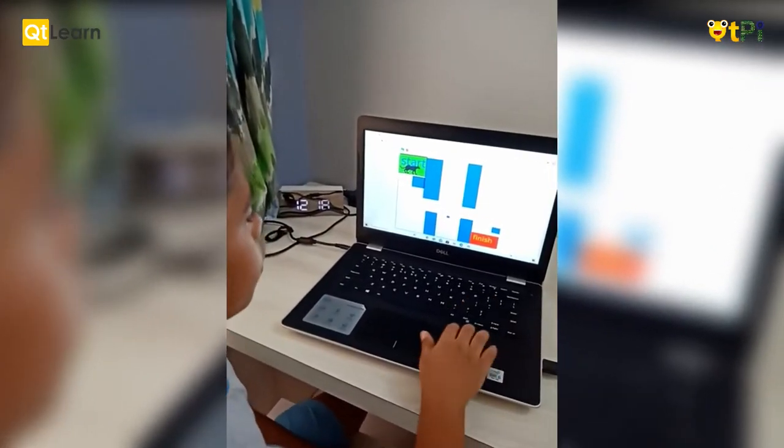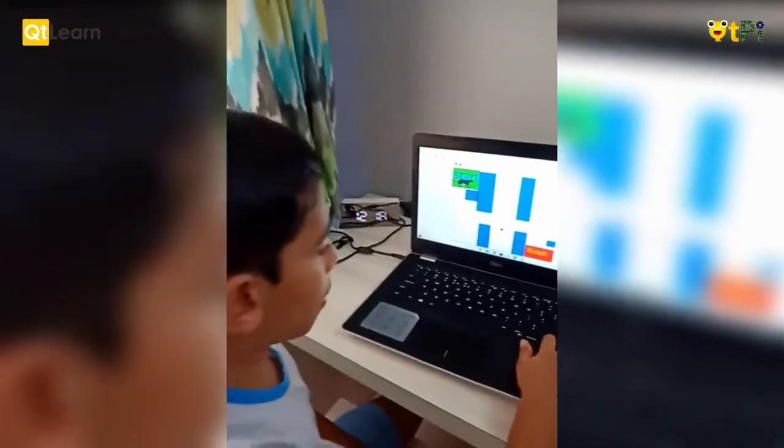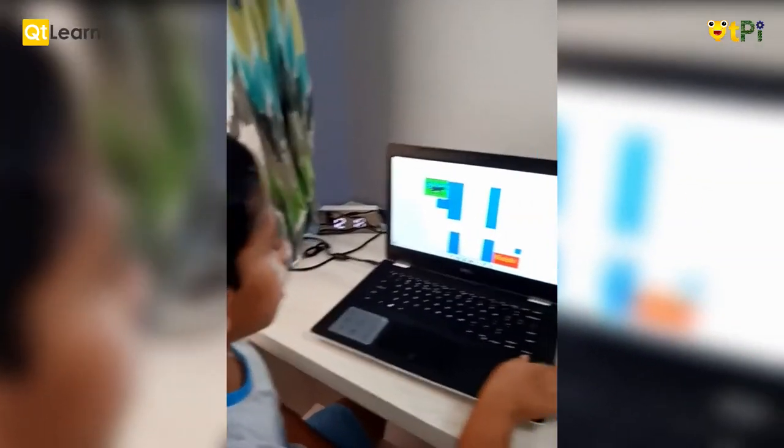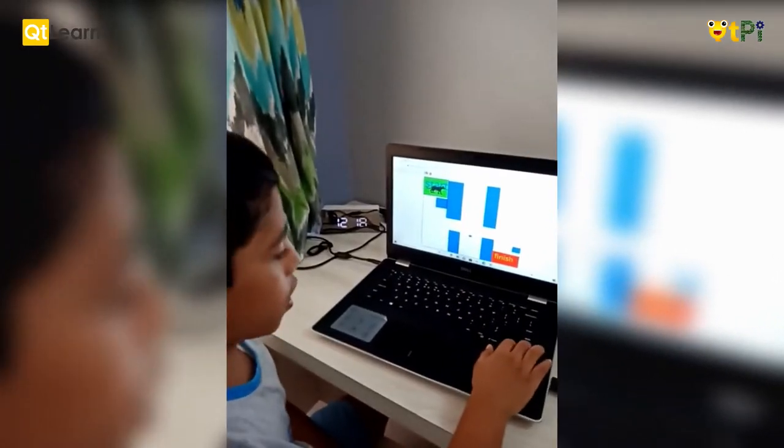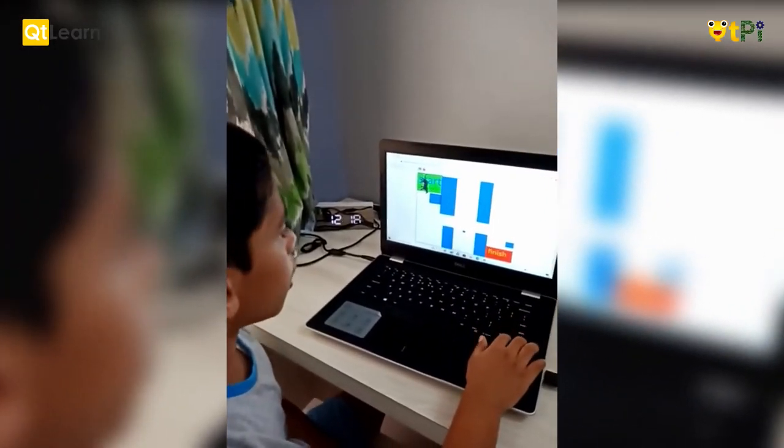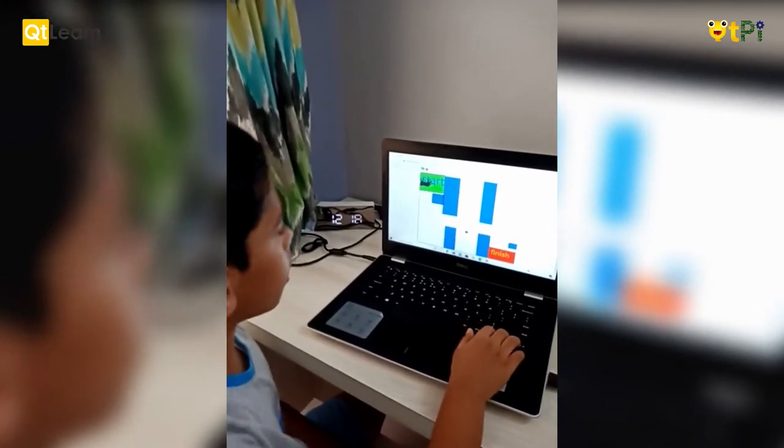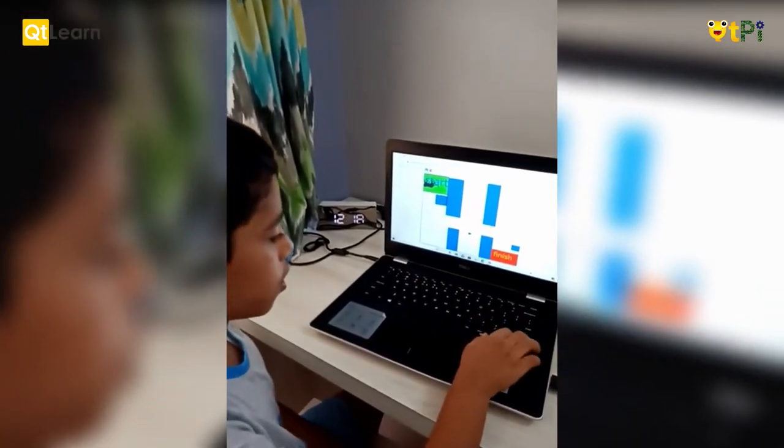Whenever you click the up arrow key, it points up and moves 10 steps. Whenever you click the right arrow key, it points right and moves 10 steps. Whenever you click the down arrow key, it points down and moves 10 steps. Whenever you click the left arrow key, it points left and moves 10 steps.